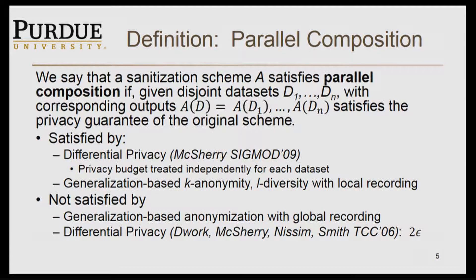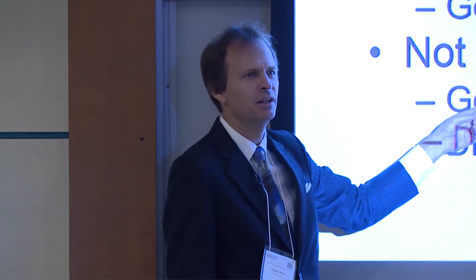Formally, what we talked about is parallel composition. A sanitization scheme satisfies parallel composition if, given disjoint data sets, the corresponding outputs — the anonymization or sanitization of D1 through Dn — satisfies the privacy guarantee of the original scheme. Differential privacy satisfies this, as shown in SIGMOD '09 by VaporBug McSherry. Generalization-based k-anonymity and L-diversity under local recoding also satisfy it. But it is not satisfied by generalization-based anonymization under global recoding.